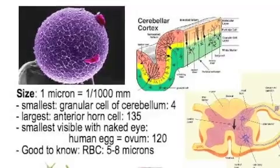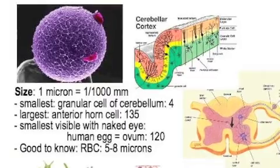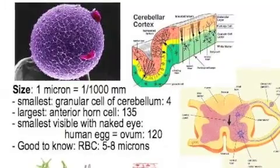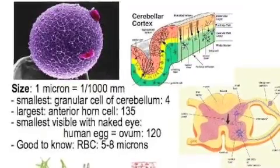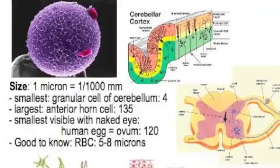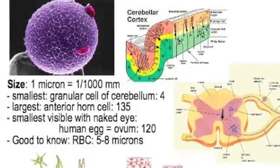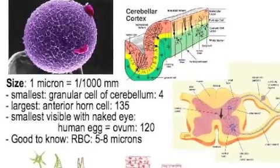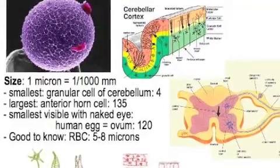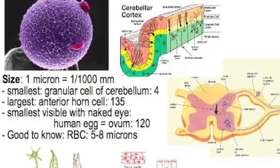Looking at their size, we describe them in microns. One micron is one thousandth of a millimeter. Ten of those makes a centimeter and 2.5 centimeters roughly makes an inch. Their size ranges from four of those to about 135 of those — that's a 30 times increase that we can see. And by the way, both of those cells are in the brain. The one we can see with the naked eye is about 120 microns and greater, and that's a human ovum — that's an egg. A good size to know is the red blood cell at 5 to 8 microns.